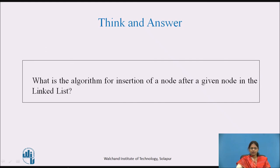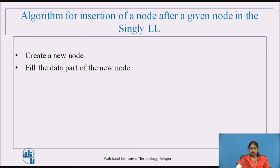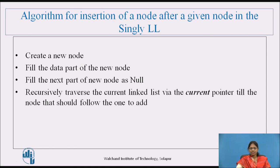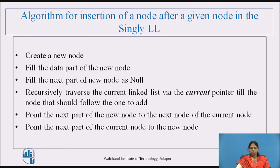Algorithm for insertion of a node after a given node in the singly linked list: First, create a new node. Fill the data part of the new node. Fill the next part of the new node as null. Recursively traverse the current linked list via the current pointer until reaching the node that should follow the one to add. Then point the next part of the new node to the next node of the current node. After that, point the next part of the current node to the new node.